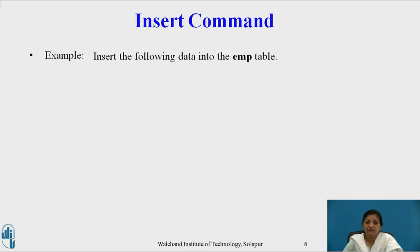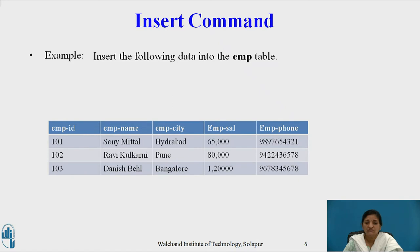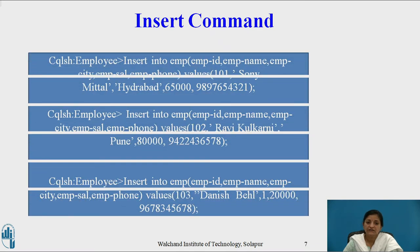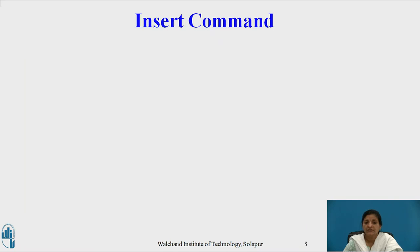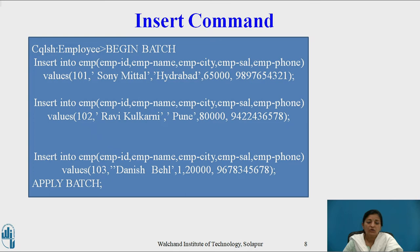Let's consider inserting three rows into the employee table. This can be done in two ways. The first is using separate INSERT commands on the Cassandra shell prompt — three individual INSERT commands. The second method is to embed all multiple INSERT commands into one batch file using BEGIN BATCH, all three INSERT queries, and then APPLY BATCH, which creates all three rows in the table.